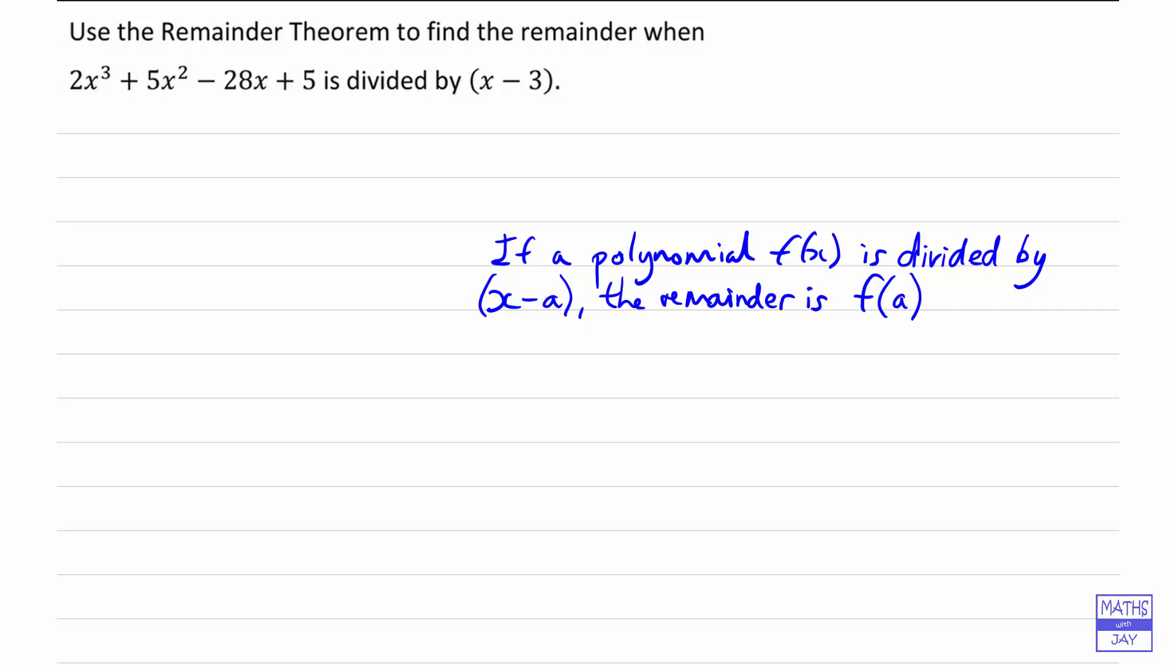So let's explain why that would be. It's because we can write the polynomial as something or other multiplied by x minus a plus a remainder.